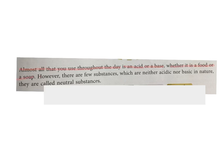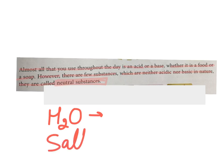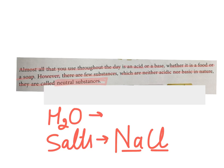However, there are few substances which are neither acidic nor basic in nature, and they are called neutral substances. For example, water (H₂O) is a neutral substance as it is neither acidic nor basic. Another example is salt — for example, NaCl, that is sodium chloride, also called common salt. It is a neutral substance.